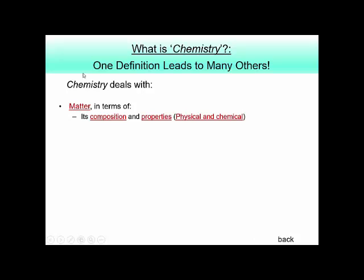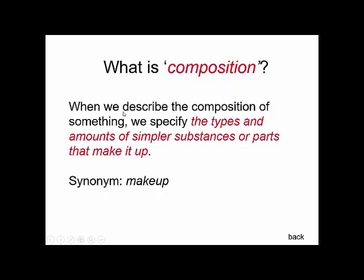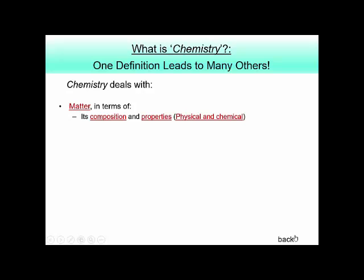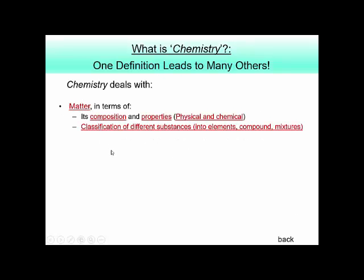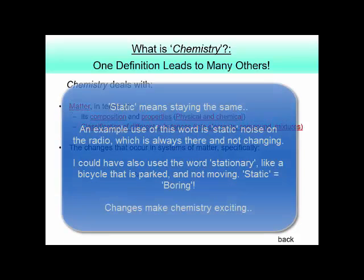So that's the definition of matter, which chemistry is about. But specifically, we talk about matter in terms of its composition and properties. Composition refers to the types and amounts of simpler substances or parts that make it up. In science, the word property means a defining characteristic that gives the substance its unique identity. When we discuss composition of matter, we can classify matter according to composition into elements, compounds, and mixtures.